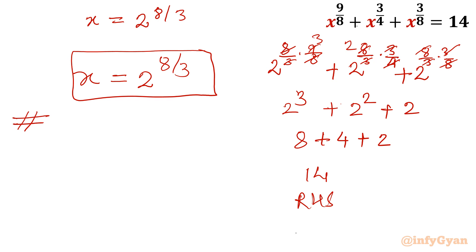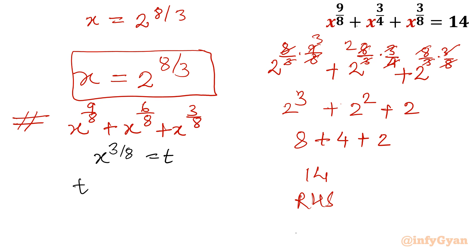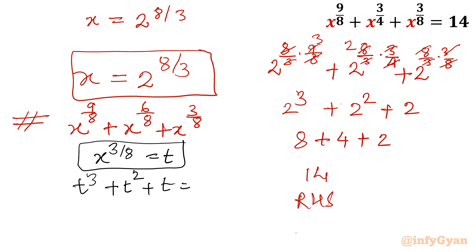There is also a second approach. The exponents are 9/8, 3/4 (which is 6/8), and 3/8. If you substitute x^(3/8) = t directly, the equation converts to t^3 + t^2 + t = 14 in just one substitution, and you will get the same result. I hope you liked this video — please subscribe, like, and share. Bye bye until the next video.